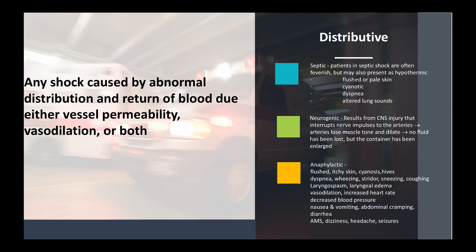Neurogenic shock happens when the CNS has been injured, interrupting nerve impulses that go to the arteries. The arteries lose their muscle tone and dilate — vasodilation. The body's not getting fluid distributed the way it should. There's no fluid loss; it's that the container has been enlarged because the arteries are dilating. Not enough is pumping around, and you get neurogenic shock — hence the distributive nature of this type of shock.